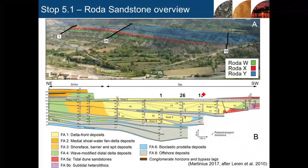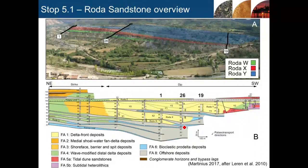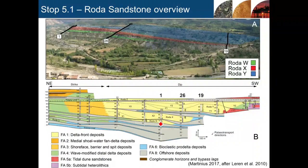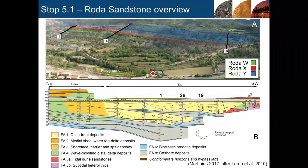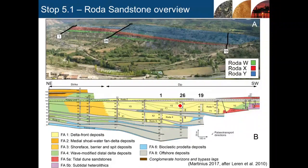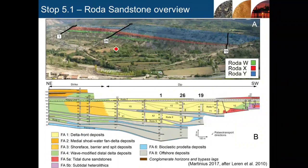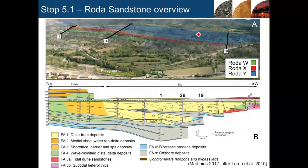Those same logs — 1, 26, and 19 — are shown in the correlation panel. The lowest of the three sandstones, Rhoda W, coloured in green, is shown as thinning and pinching out from left to right, and that's borne out by what we can see in the hillside. The upper sandstone unit, Rhoda Y, is more continuous, thickening slightly from left to right as we go from measured section 1 to measured section 19, and again that's borne out by what we can see in the hillside.